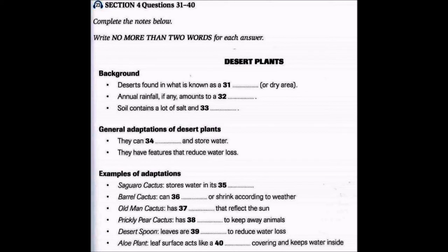The saguaro is a pretty woody plant — its skeleton is actually used in building materials, so it's quite strong. This next plant is called the barrel cactus, named because it looks rather like a barrel. It can grow up to a meter in height, and it has long yellow spines. Its shape allows it to expand when it rains and store water in its spongy tissue, then shrink in size during dry times as it uses the stored water.